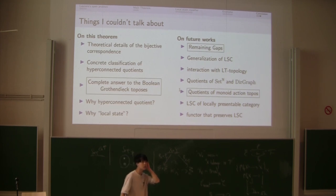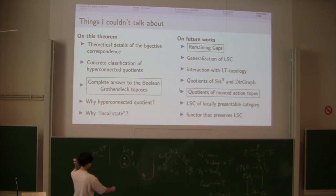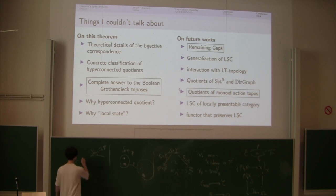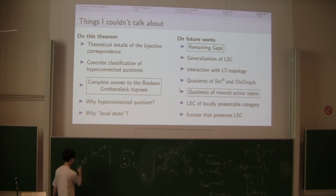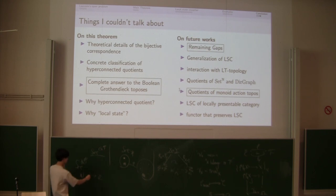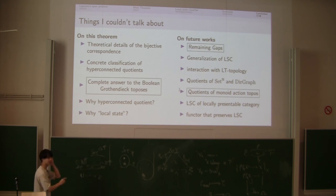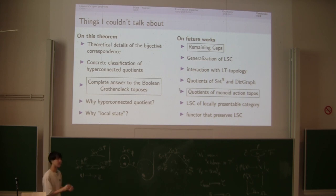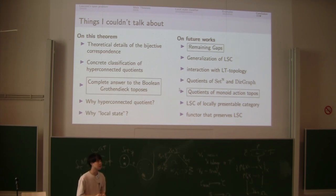Question: Do you have an example of a map that is connected but not hyperconnected? Answer: Yes. My favorite example is the presheaf topos over a one-element category — that is, the category Set, which is not a monoid. Since there is a monoid homomorphism, we have this example. Typically, connected geometric morphisms induced by surjective ring homomorphisms tend to be not hyperconnected.